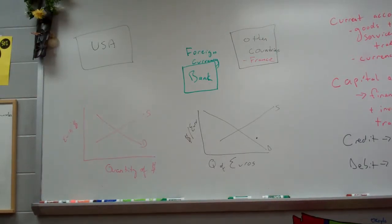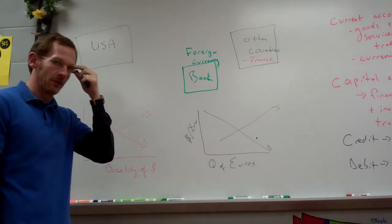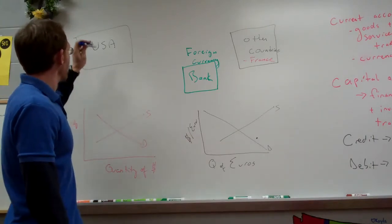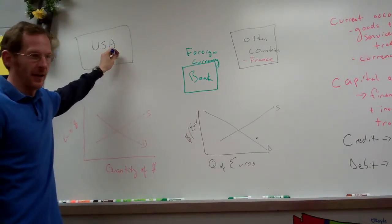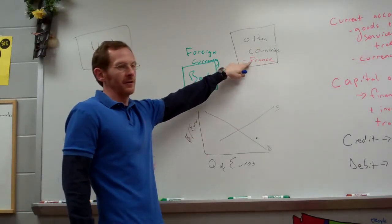So here is an example of how this banking system works in the foreign currency market. We'll say this rectangle is United States, and this rectangle is any other country. We'll say France, for example.